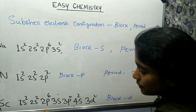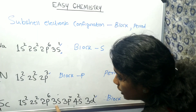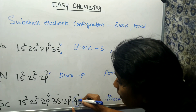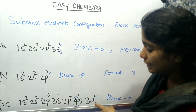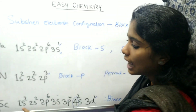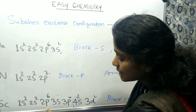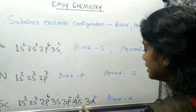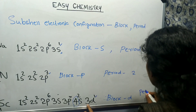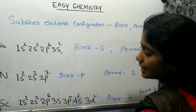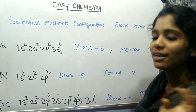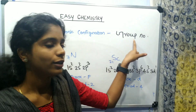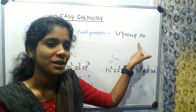The principal quantum numbers are 1, 2, 3, 4. The highest number gives the period. For example, if the highest number is 3, the period is 3. This is how we identify the period number from electronic configuration. Now one more concept: the group number.